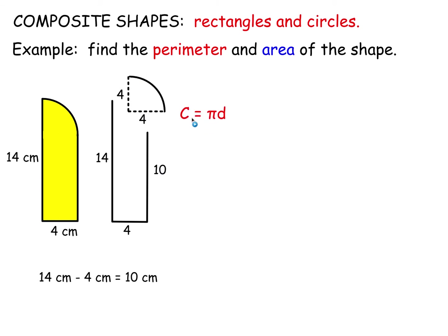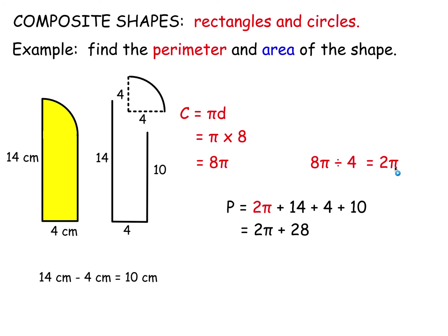Using circumference pi d, radius is 4 so diameter is 8. Quarter it because you have a quarter circle, then add up the quarter circumference and the 14, 4, and 10. It gives you the exact answer 2 pi plus 28. That is the exact answer and that is how the answer will first be written on the worksheet. If you want it as a decimal, simply press the SD button on the calculator.